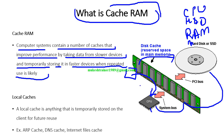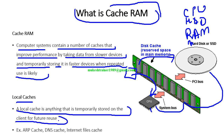Cache is not only a hardware concept — it exists in everything: your browser cookies, temporary files you visit, and more. Local cache is anything that is temporarily stored on the client for future reuse. Examples include ARP cache, DNS cache, and internet file cache.